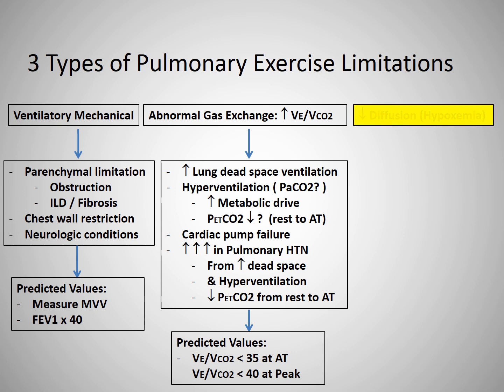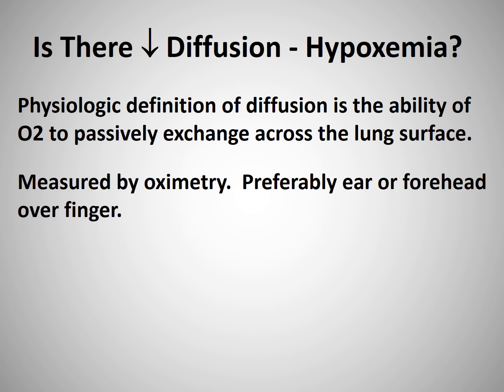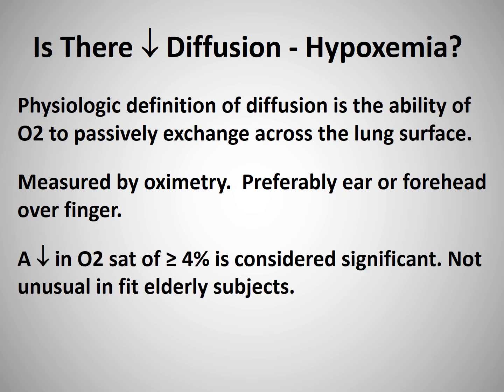Let's now move on to the third category of pulmonary limitations, which we will categorize as diffusion limitations. When we talk about diffusion limitations, we are referring to the physiologic definition of diffusion, which is the ability of O2 to passively exchange across the lung surface. We use oximetry to measure the O2 saturation — preferably ear or forehead over finger, especially when using a cycle ergometer, because as exercise intensifies, subjects tend to want to grip the handlebars tighter and tighter. A decrease in O2 saturation of greater than or equal to 4% is usually considered a significant decline, but keep in mind, if the O2 sat does not fall below 90%, it is probably not a limiting factor, and it is not unusual to see drops of greater than or equal to 4% in fit elderly subjects.